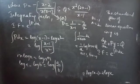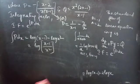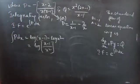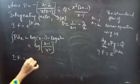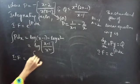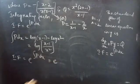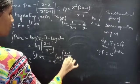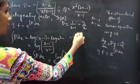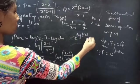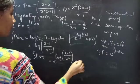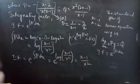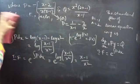Now coming to the integrating factor: integrating factor equals e to the power of integral P dx equals e to the power of log[(x minus 1)/x squared]. Since e to the power of log f(x) equals f(x), the integrating factor equals (x minus 1)/x squared.